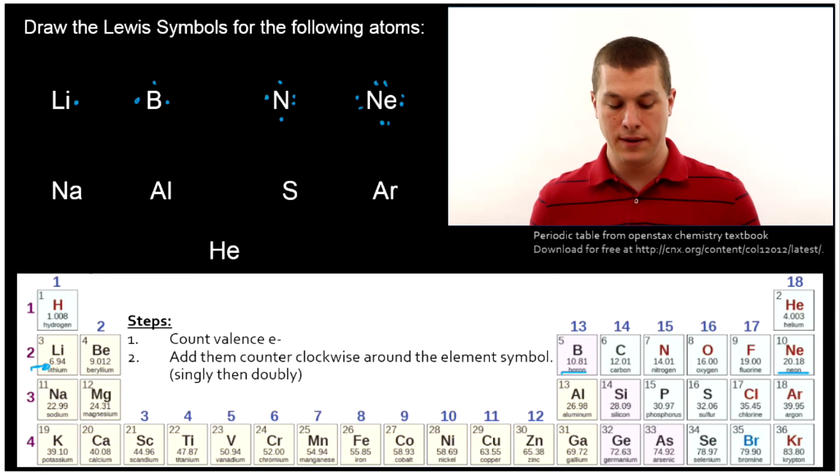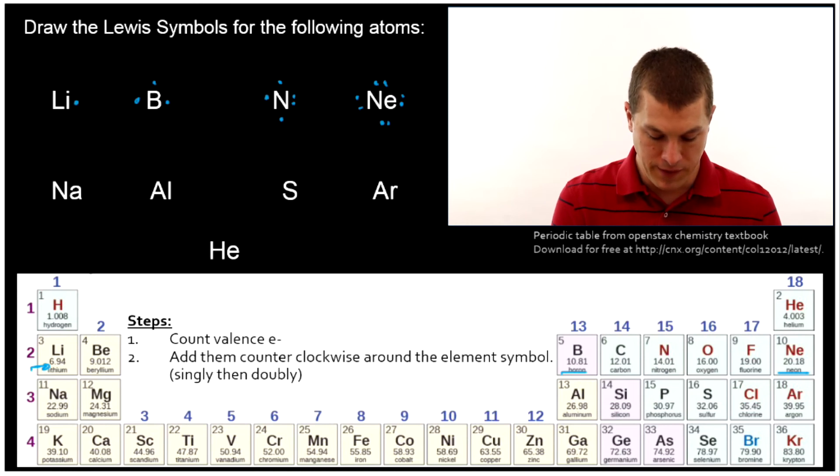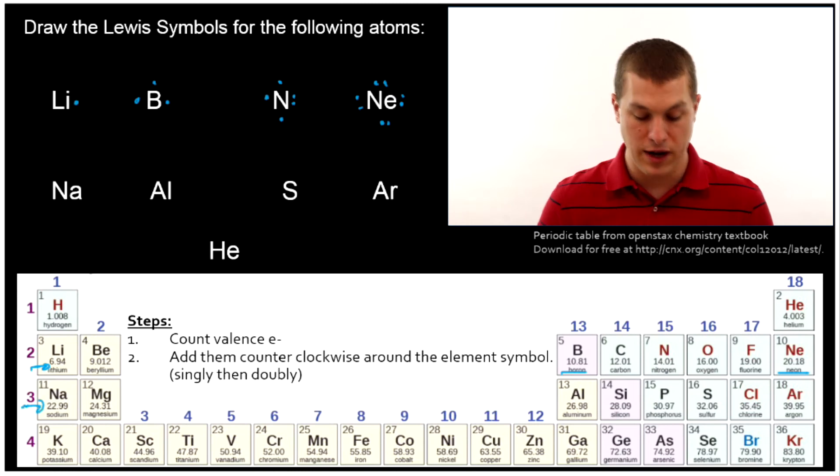Now the cool thing about these Lewis symbols if you can call it that if you're a chemist you think it's cool. If you're a normal person well are you still watching the video a normal person or have you given up? I don't know. Anyway if you're a lame chemist such as myself it's cool because these are periodic properties. That is they repeat over and over again based on the periodic table. So for sodium we notice it's right below lithium. Sodium has one valence electron and it'll look exactly like lithium.